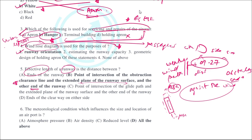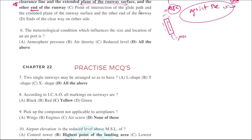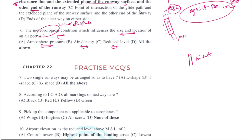The meteorological condition, which includes atmospheric pressure, air density, and reduced level, determines the size and location of the airport. Runway orientation is mostly dependent on the meteorological condition, particularly the wind pattern. All weather conditions affect the decision on airport location.